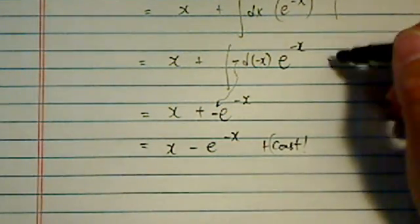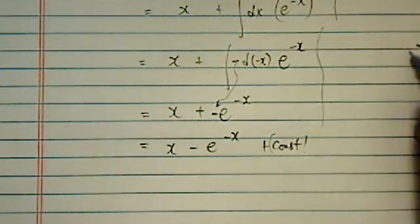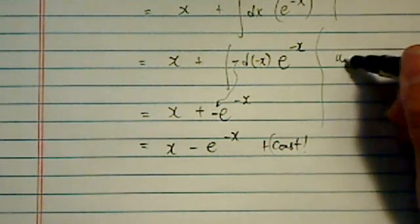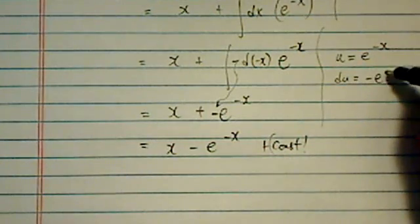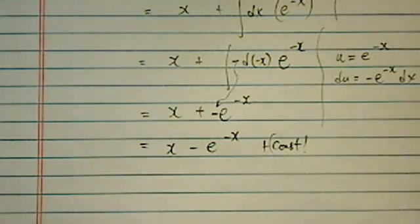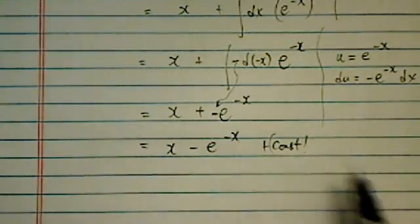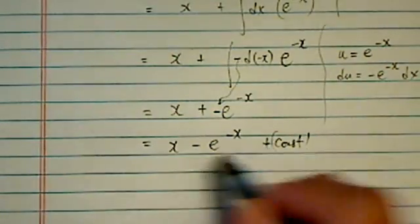Now back over here, if this trick is not familiar to you, it's not a big deal. You can do a U equal to E to the minus X. Then DU equal to minus E to the minus X dx, and from there you can do substitution. You will end up exactly the same answer.